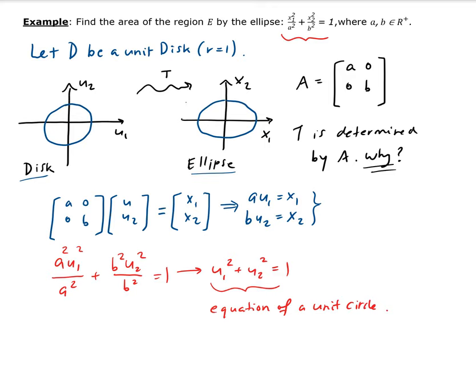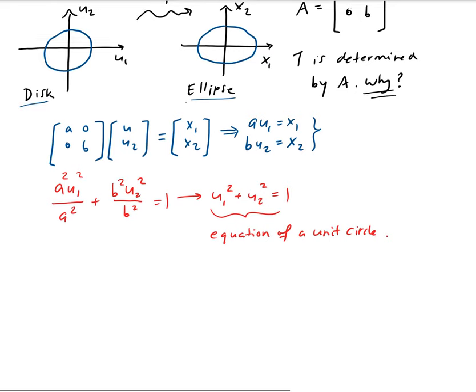Therefore, we showed that if we have U, if U is a vector in D, so U belongs to the disk with the condition that U1^2 + U2^2 ≤ 1, because that's including the boundary and within this disk.